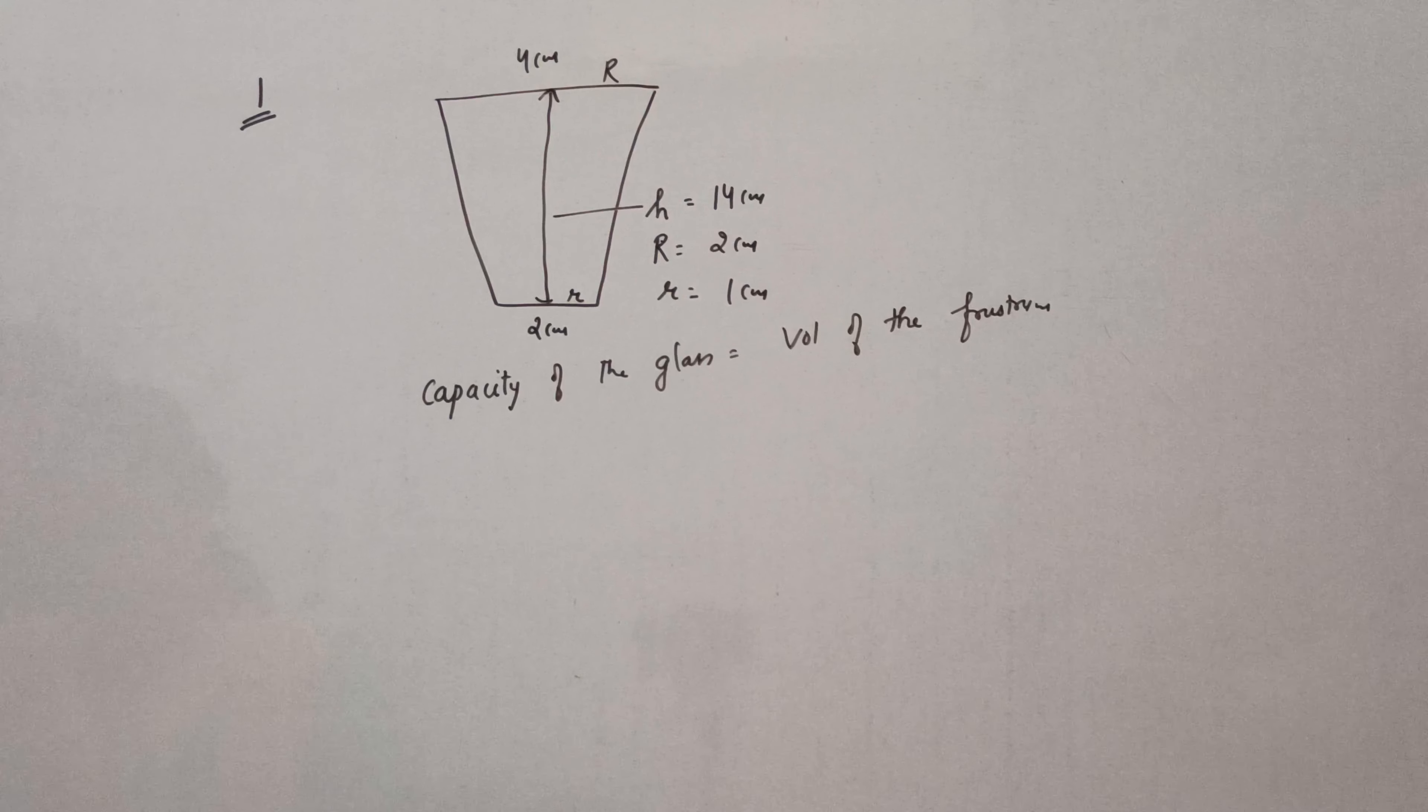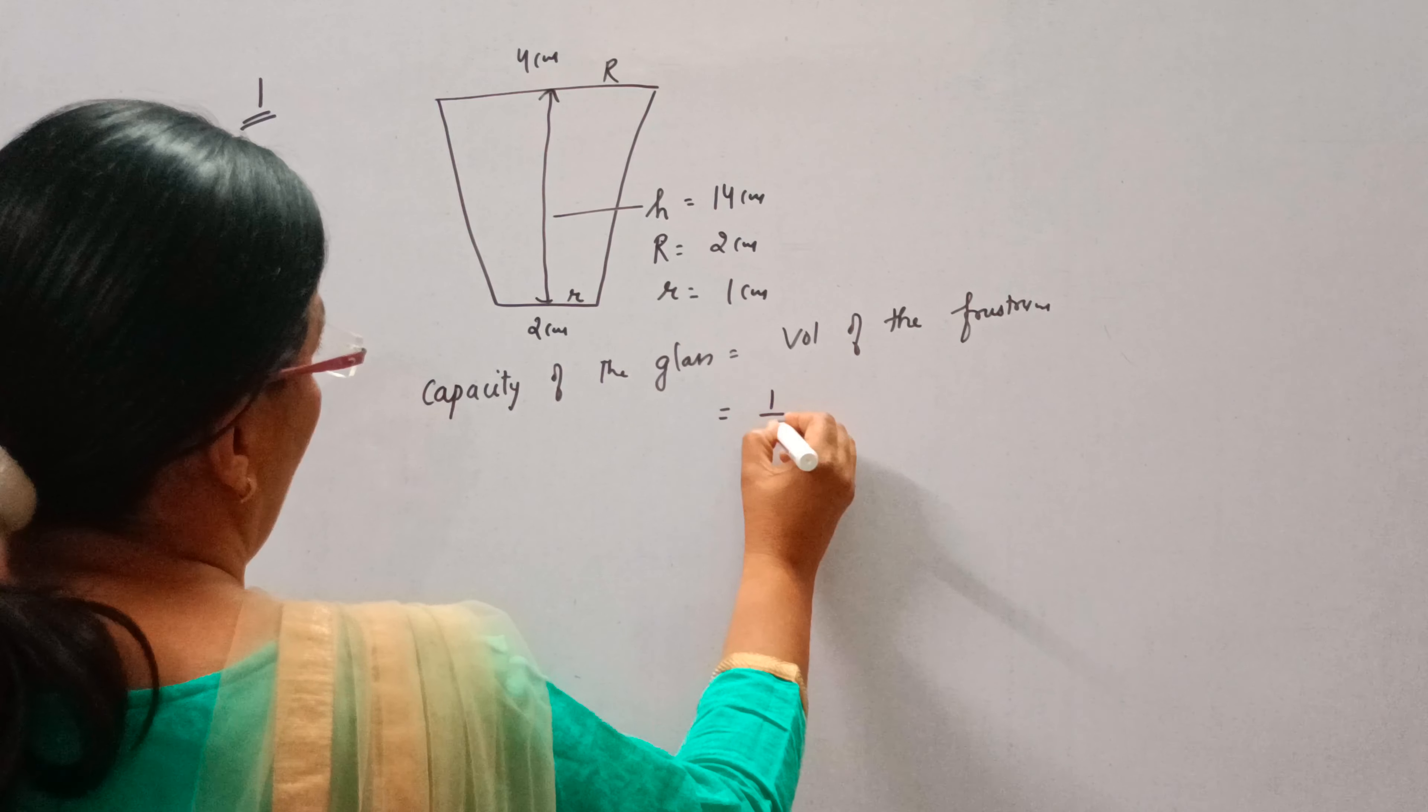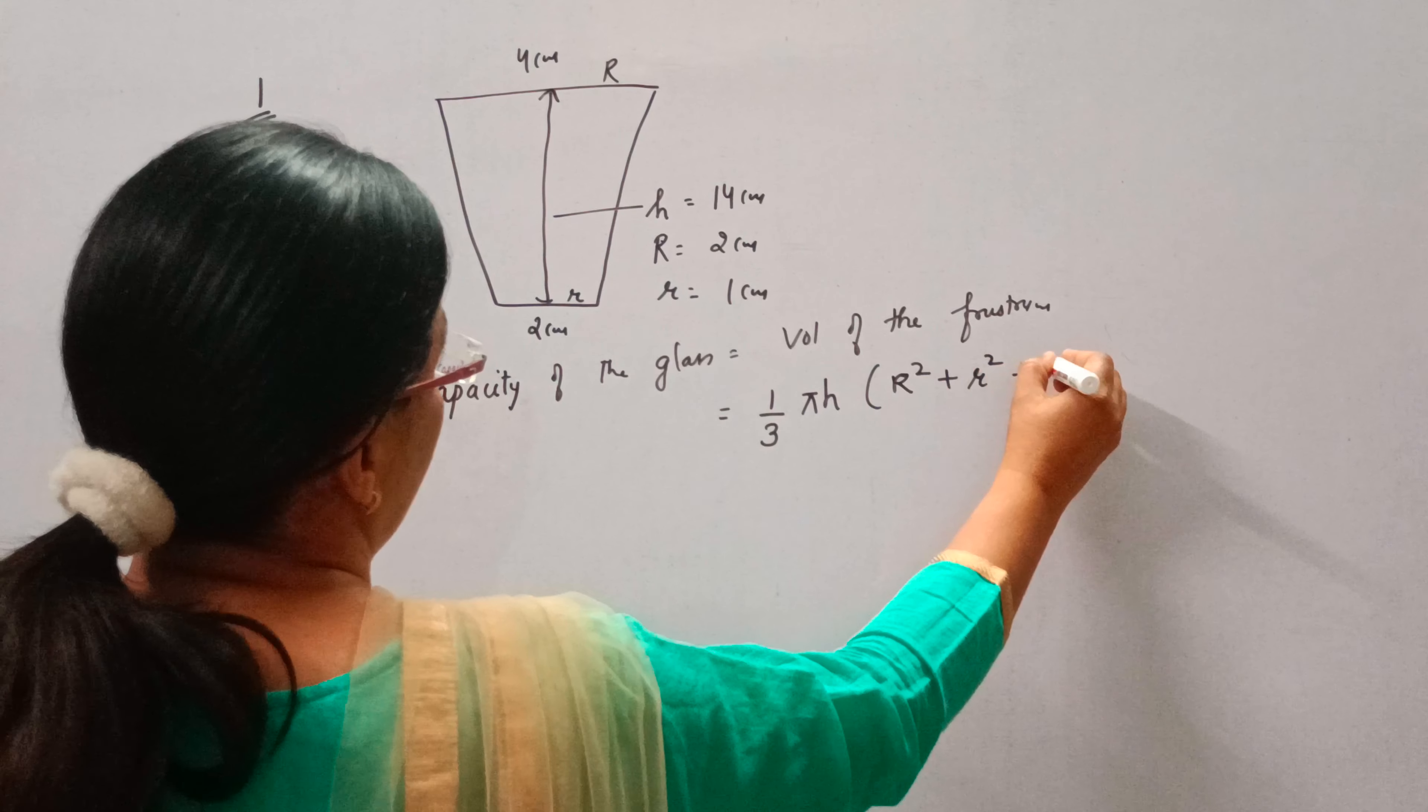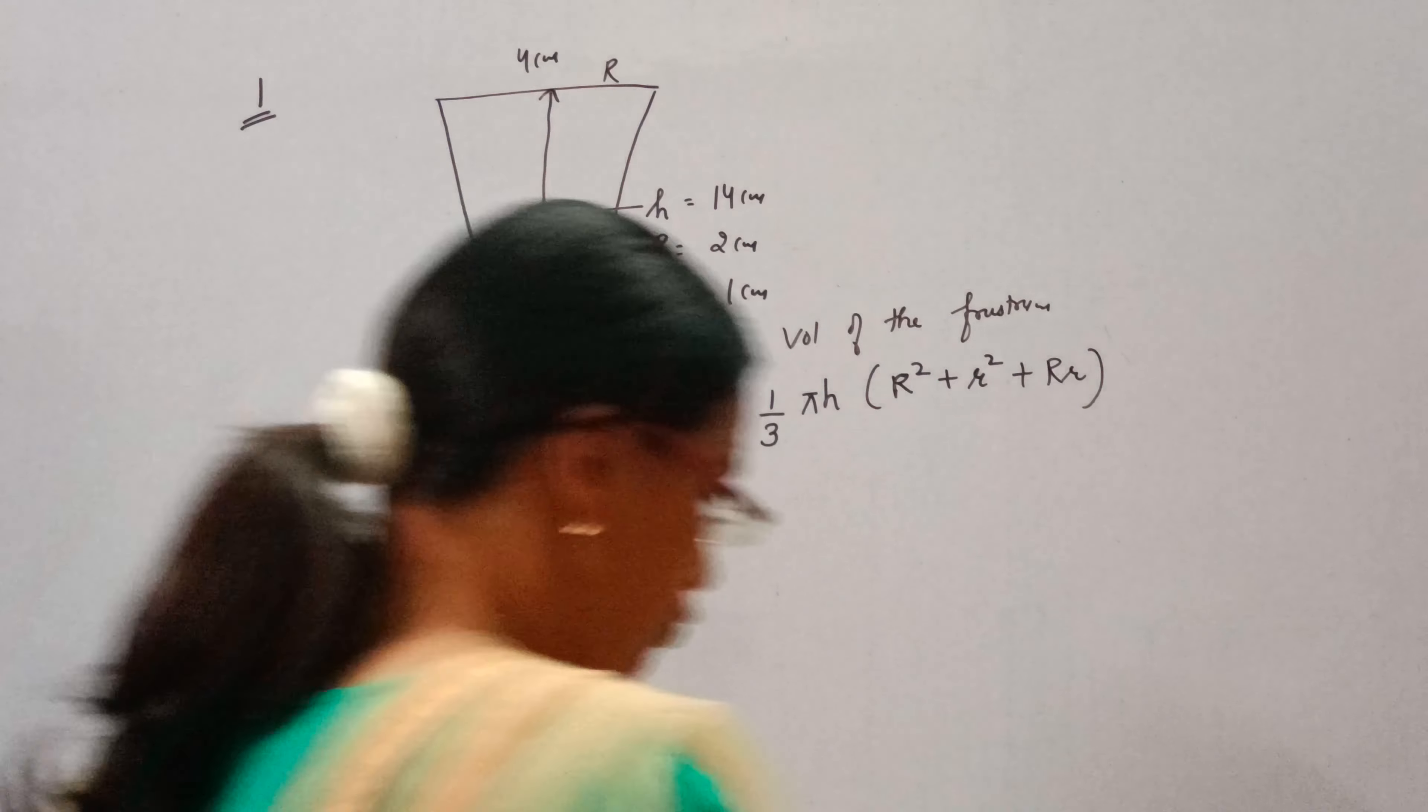And what is the volume of a frustum? The volume of a frustum is 1 upon 3, pi h, into r square plus r square plus r into r. Now we will put values.